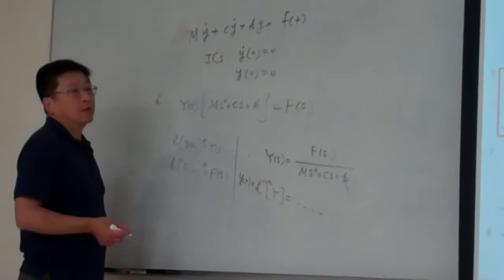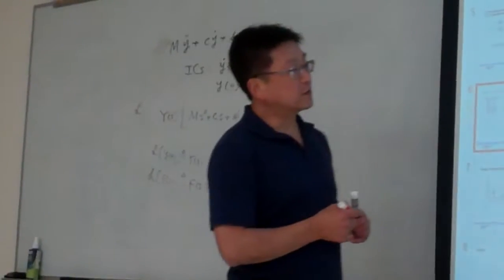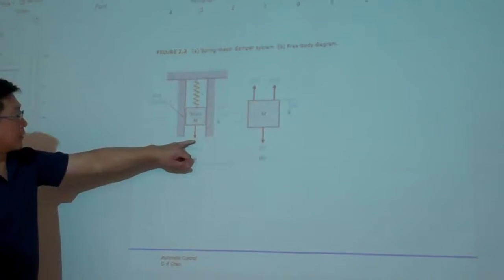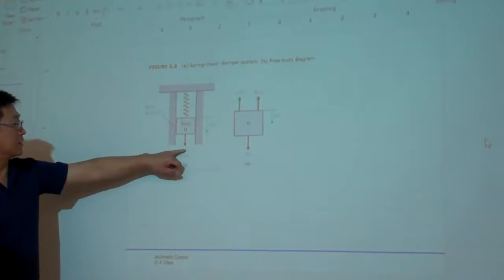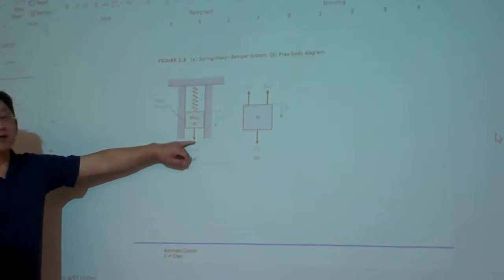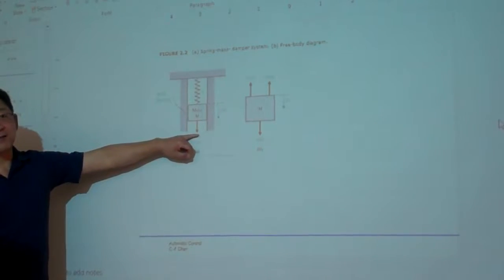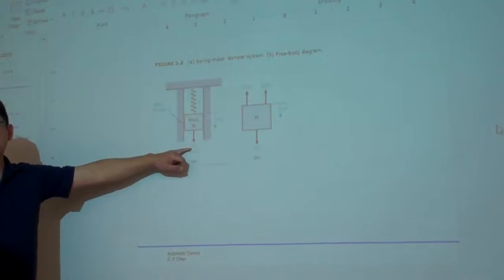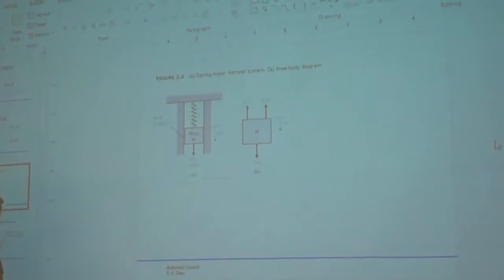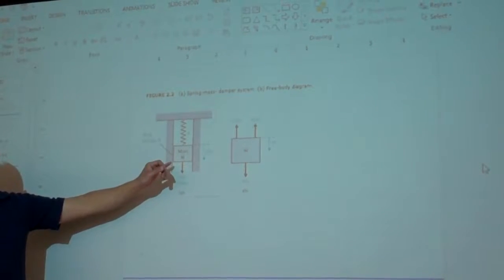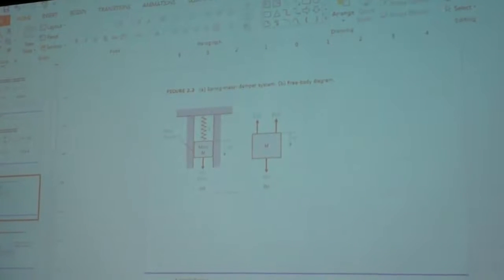I want to introduce a term. For this system — a single degree-of-freedom system — we have additional loading that is F of T, the external excitation. F of T can be any type of external loading: it can be a constant, a linear, a sinusoidal function, or any kind of non-periodic function. By including this external excitation, the vibration system is called a forced vibration system, which will be covered in ME40A.